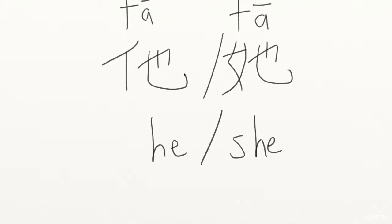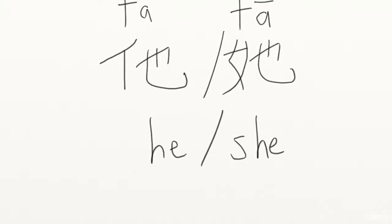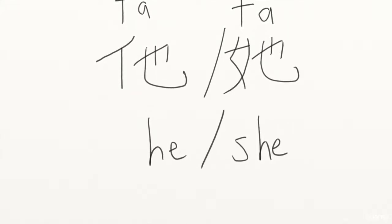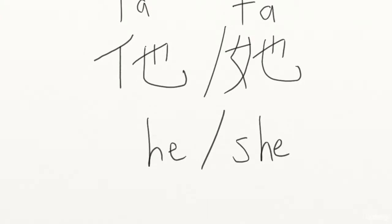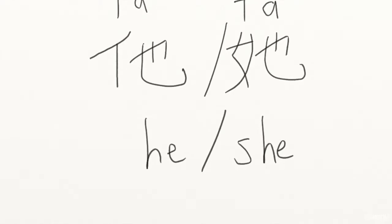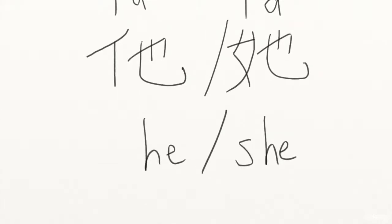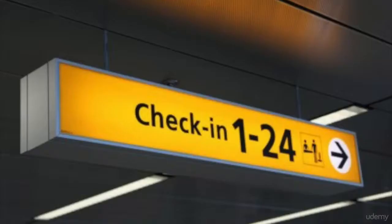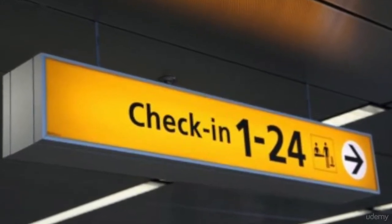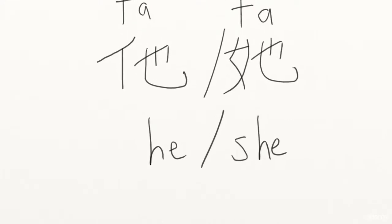她 (tā), 她. 她 means he or she. You will notice that both words are written differently but pronounced the same way. That's why, in Mandarin Chinese, you can't tell someone's gender just by referring to the pronoun. The way you can remember 她 is to think of he's leaving — ta-ta, he's leaving. Now you try pronouncing 她.